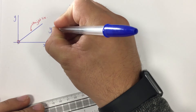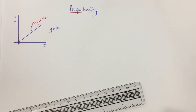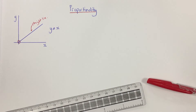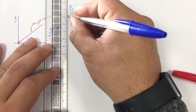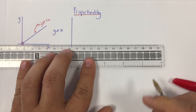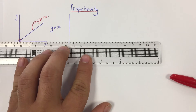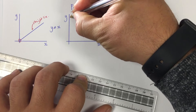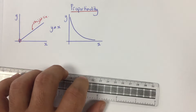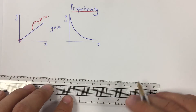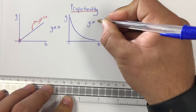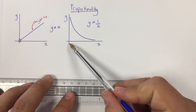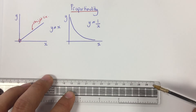We would write this as y is directly proportional to x. What that means, in essence, is that as I increase x, y will increase by some proportion. The next type of proportionality we commonly encounter is inversely proportional. The graph for inversely proportional is an asymptotic curve that never quite touches the axes, and we write that as y is directly proportional to 1 over x. This means that as x increases, y decreases by some proportion.